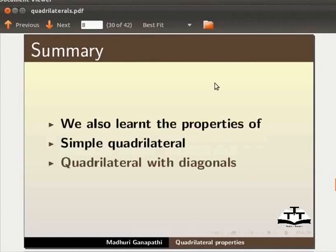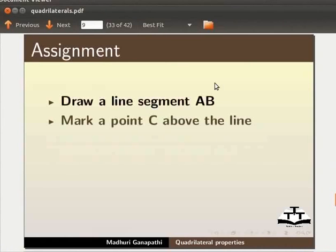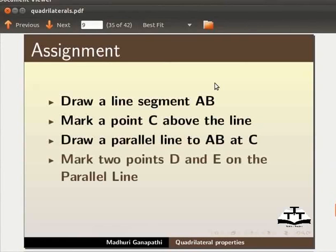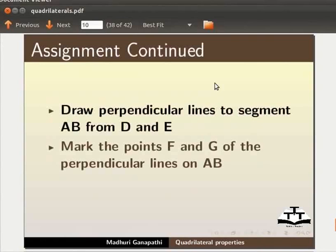As an assignment, I would like you to draw a line segment AB. Mark a Point C above the line. Draw a Parallel Line to AB at C. Draw two Points D and E on the Parallel Line. Join Points AD and EB. Draw Perpendicular Lines to Segment AB from D and E.